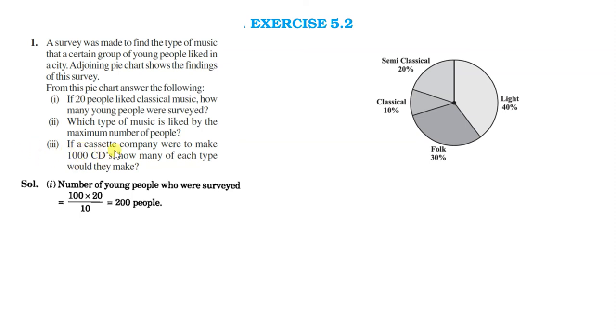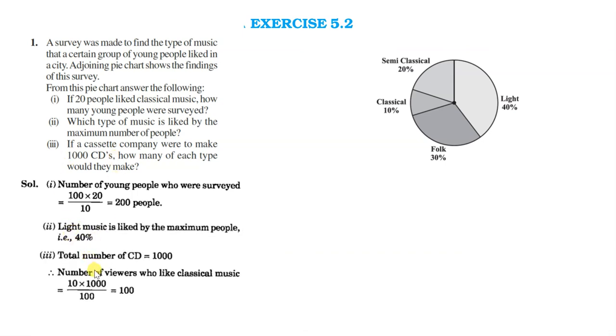The last one is, if a cassette company were to make 1000 CDs, then how many of each would they make? If a cassette company would make 1000 CDs, then how many of each type of music can be made? Total CDs are 1000. Classical music has 10 percent of 1000, that is 10 multiplied by 1000 divided by 100.